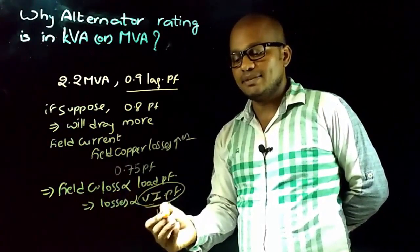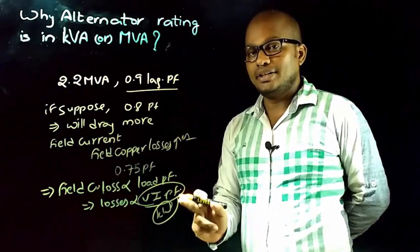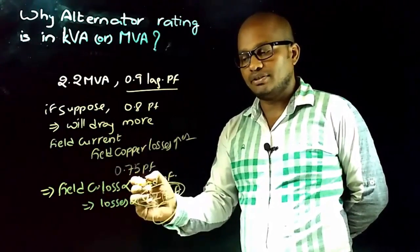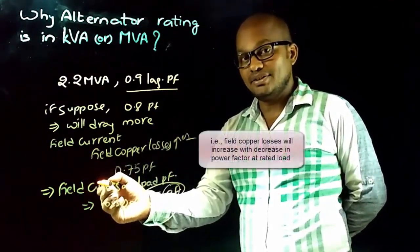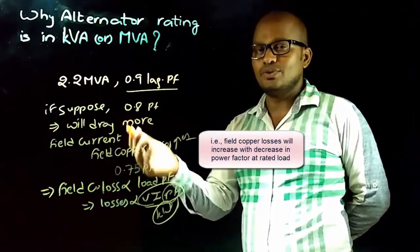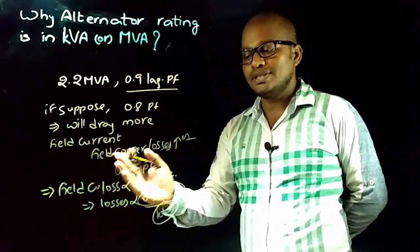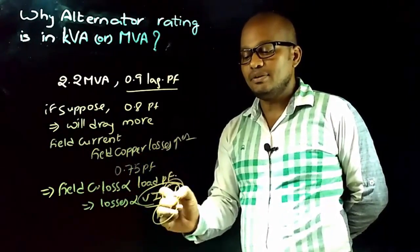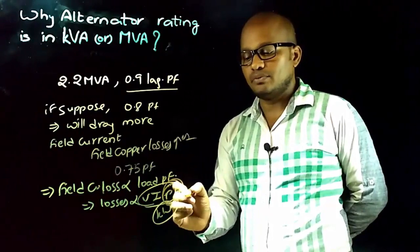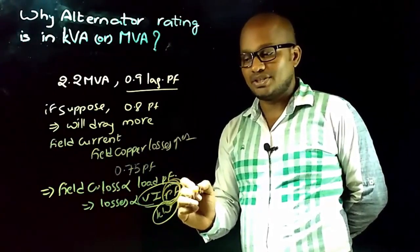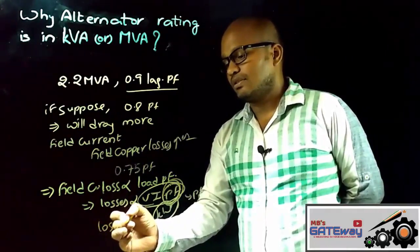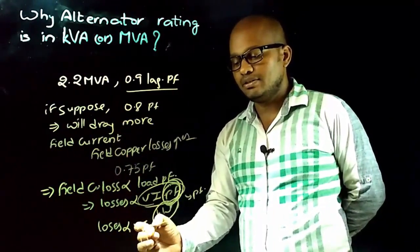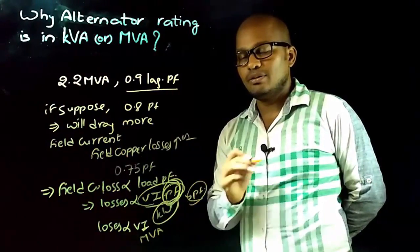If the alternator rating is specified in kilowatts, it means losses are dependent on power factor. If losses depend on power factor, field copper losses will increase, causing more heating, which is not acceptable. So we must make field copper losses independent of load power factor. To achieve this, we must fix the power factor — if power factor is constant, losses are directly proportional to V×I only.